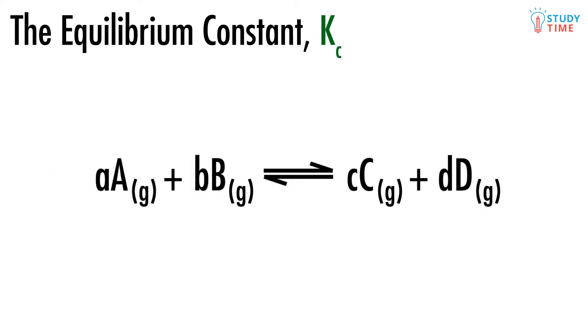First, briefly inspect this simple two-way reaction. The four chemicals that we've got are A and B on the reactant side, and then C and D on the product side. The lower case letters simply tell us the ratio of moles of each of those reactants and the products we have.